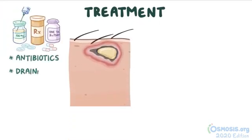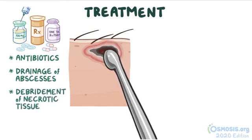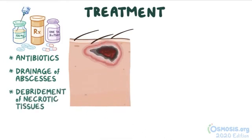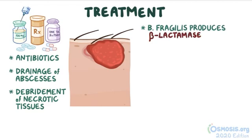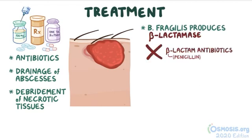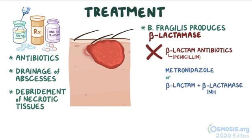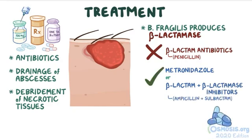Treatment of Bacteroides fragilis infections consists of antibiotics and drainage of abscesses, or debridement of necrotic tissues. However, since Bacteroides fragilis produces beta-lactamase, beta-lactam antibiotics like penicillin cannot be used. Metronidazole, or a combination of beta-lactamase inhibitors like ampicillin and sulbactam, are efficient.